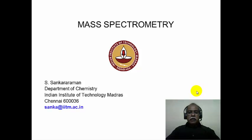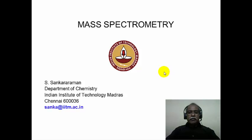Mass spectrometry is not only used in the area of chemistry; it is widely applied in the area of forensic sciences and biological sciences. In biological sciences, mass spectrometry has contributed enormously recently, after the discovery of electrospray ionization mass spectrometry and MALDI mass spectrometry. We will have a look at the basic information on mass spectrometry in this particular module.